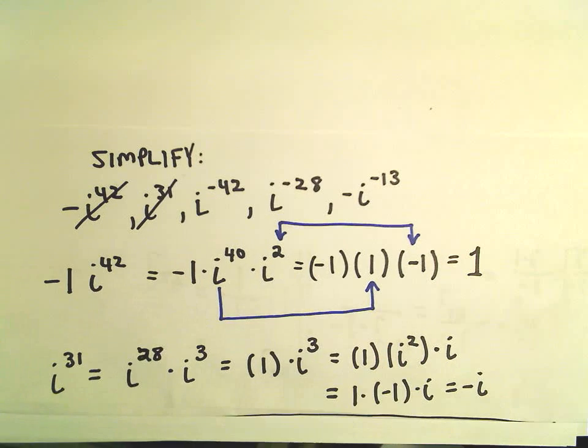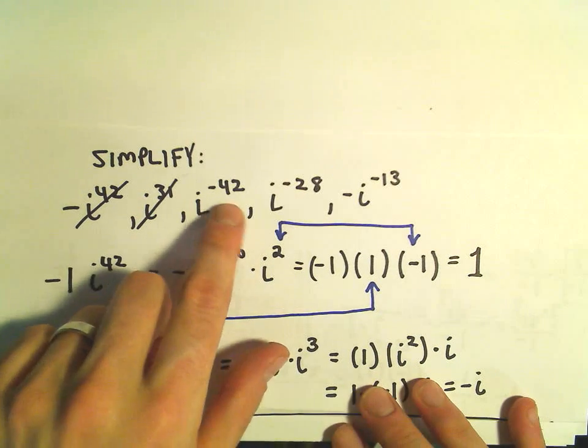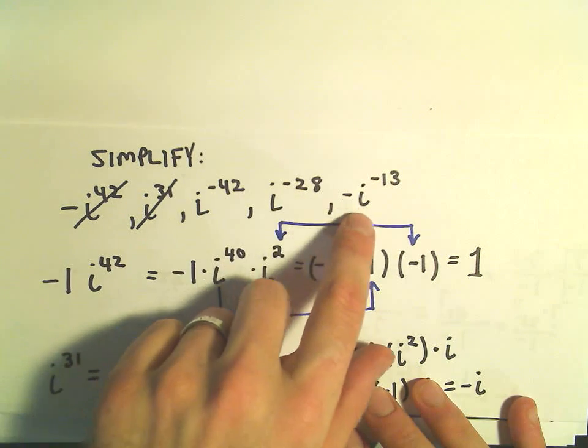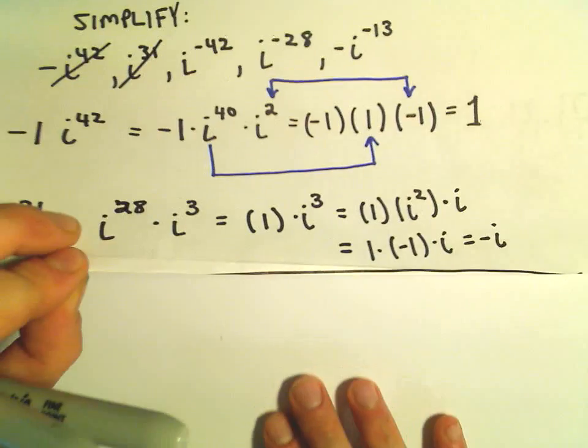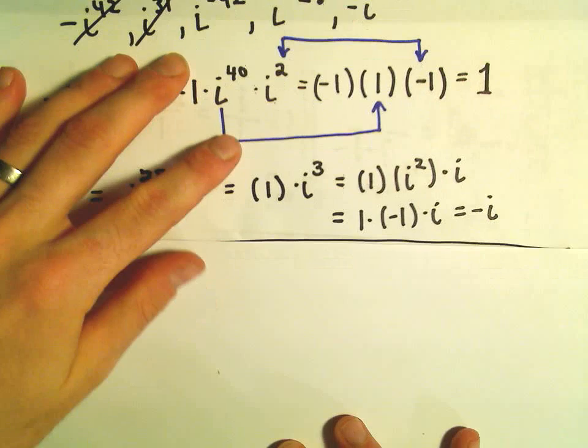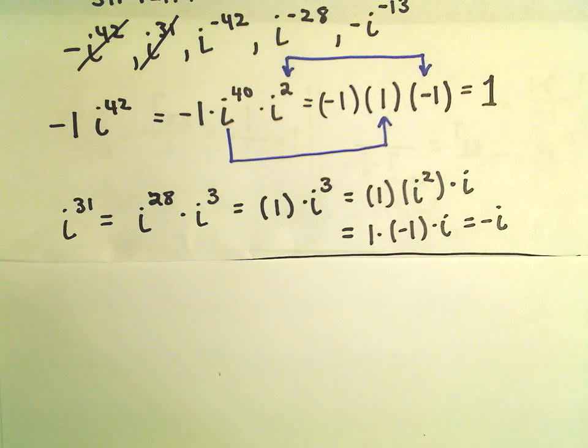So in this case, we had three problems left over: i to the negative 42, i to the negative 28, and negative i to the negative 13th. So again, notice now we have some negative exponents floating around. That's okay, they won't be too bad to deal with.